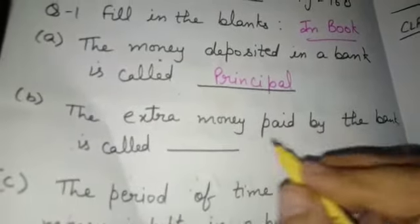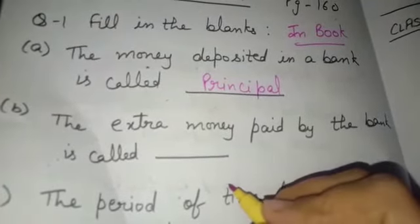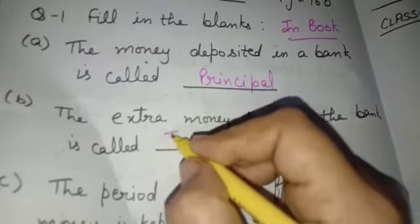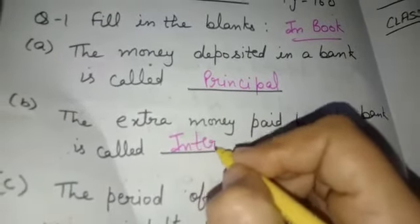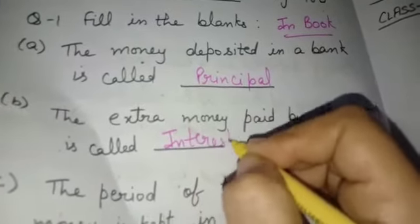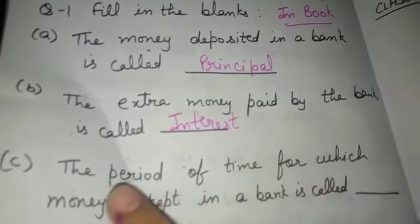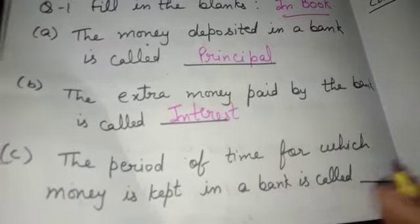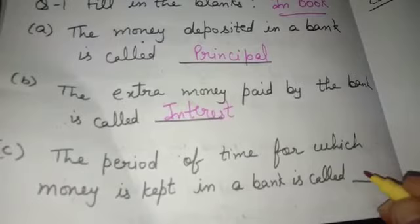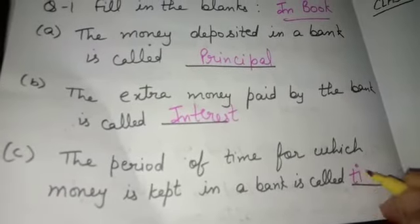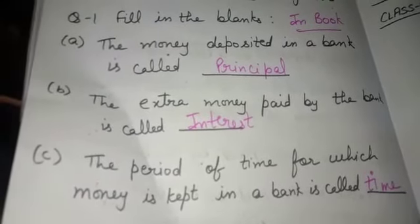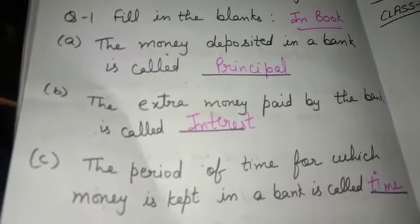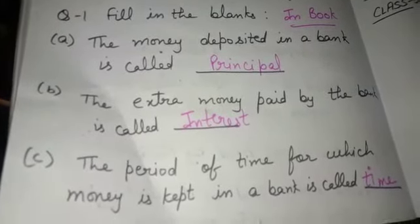The extra money paid by the bank is called? Interest. Extra money is called interest. The period of time for which money is kept in a bank is called? Time. The period of time for which money is kept in a bank is called time.